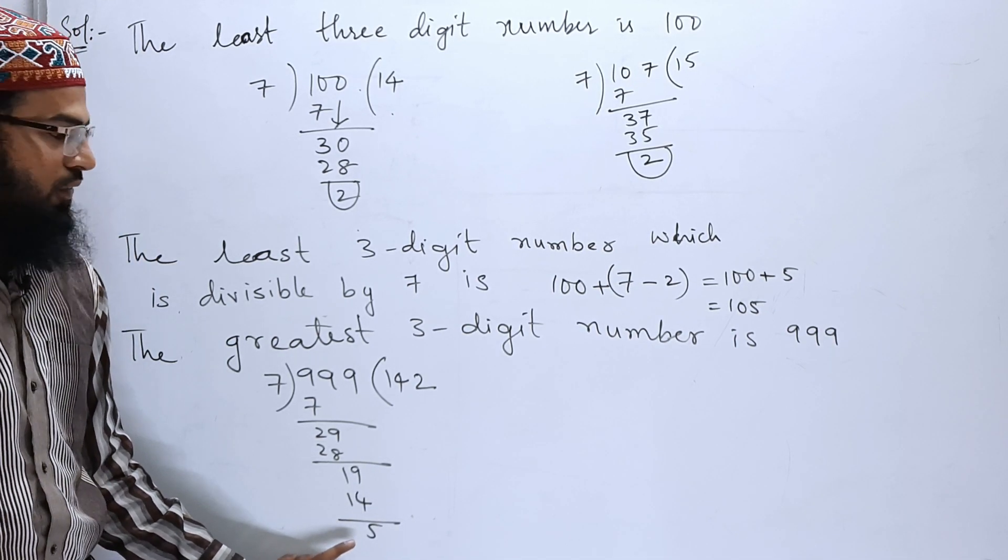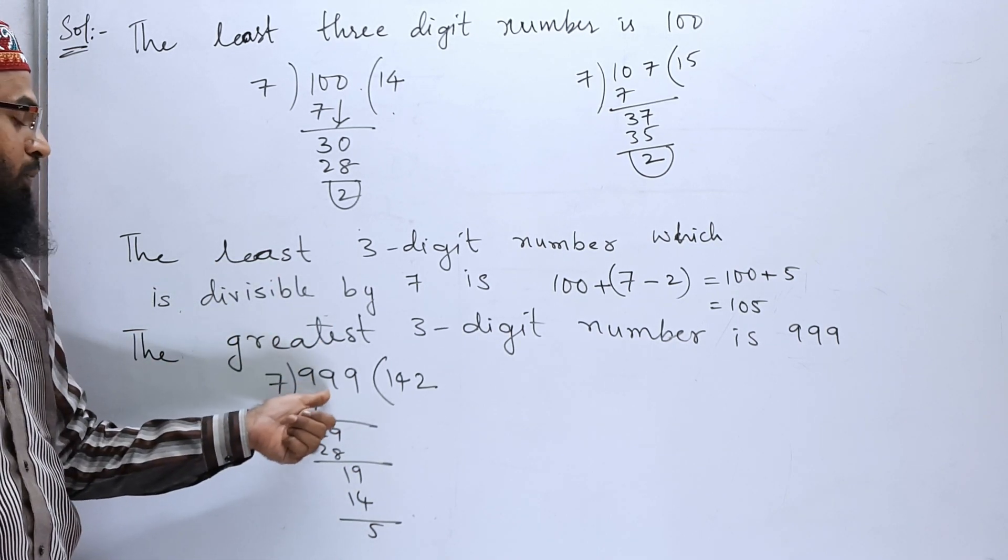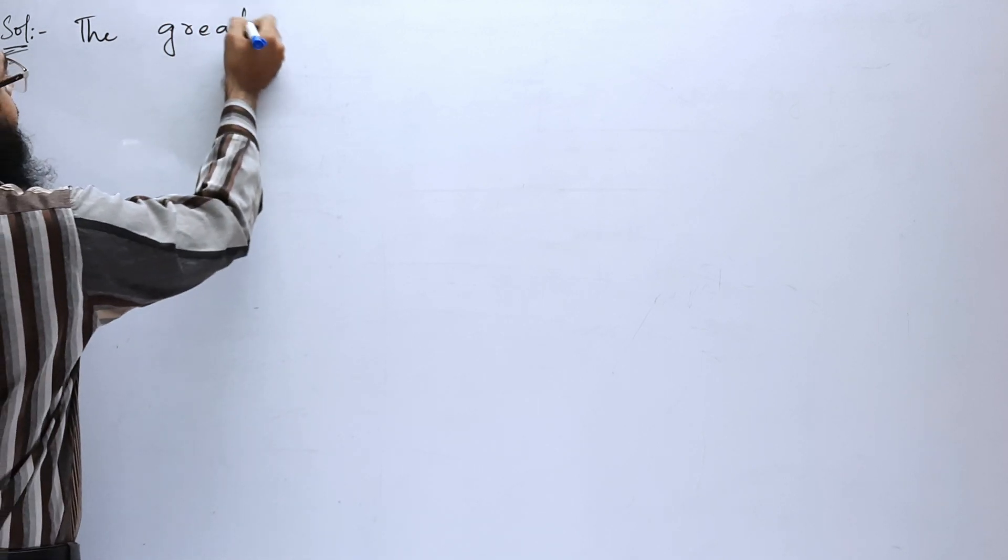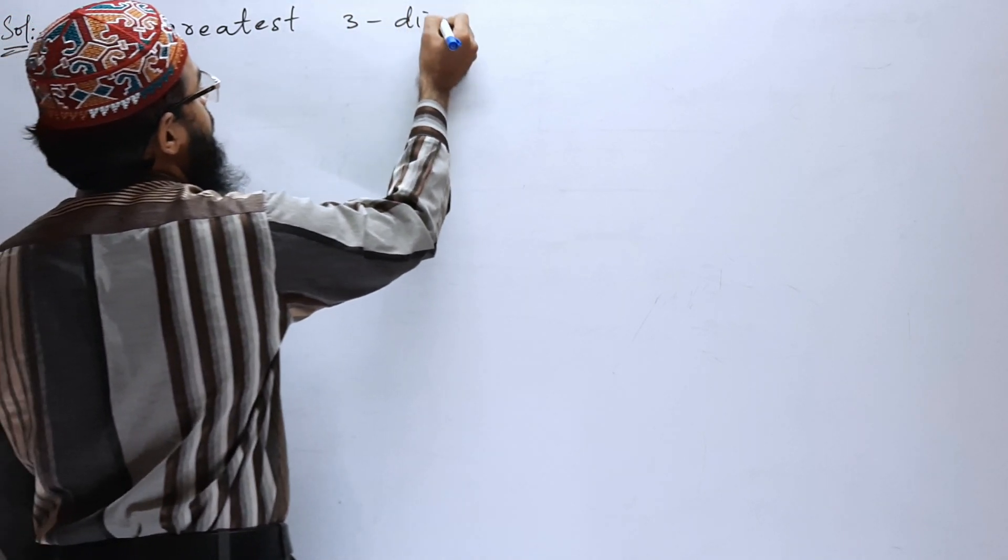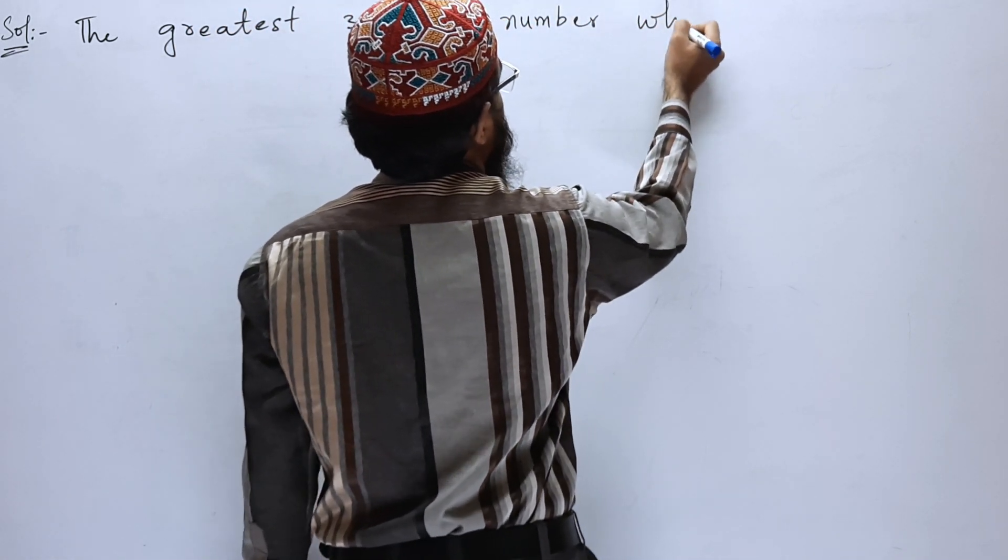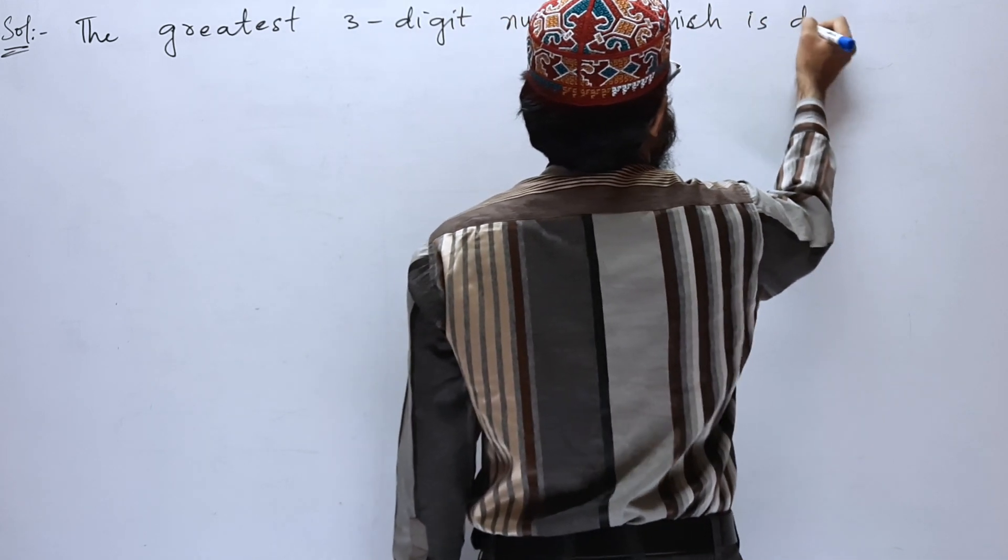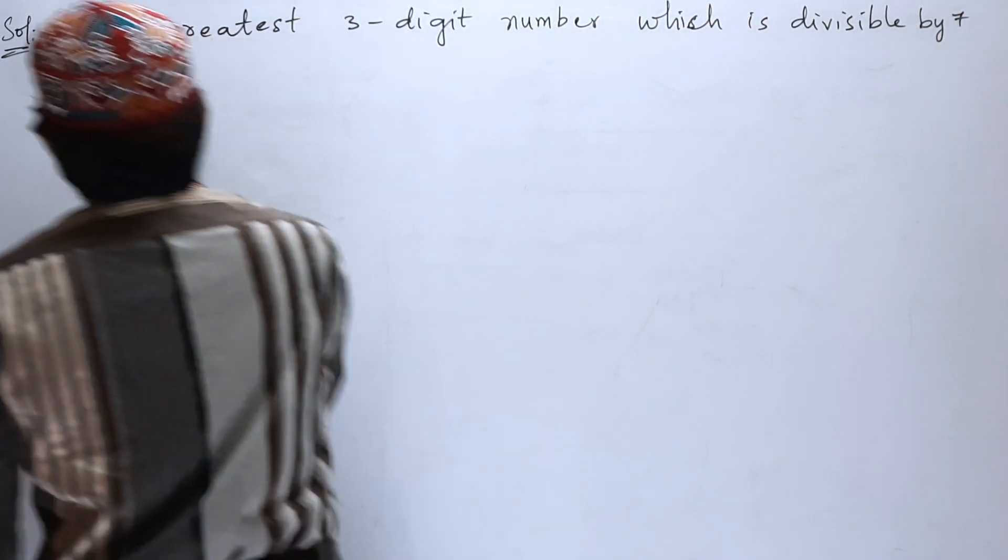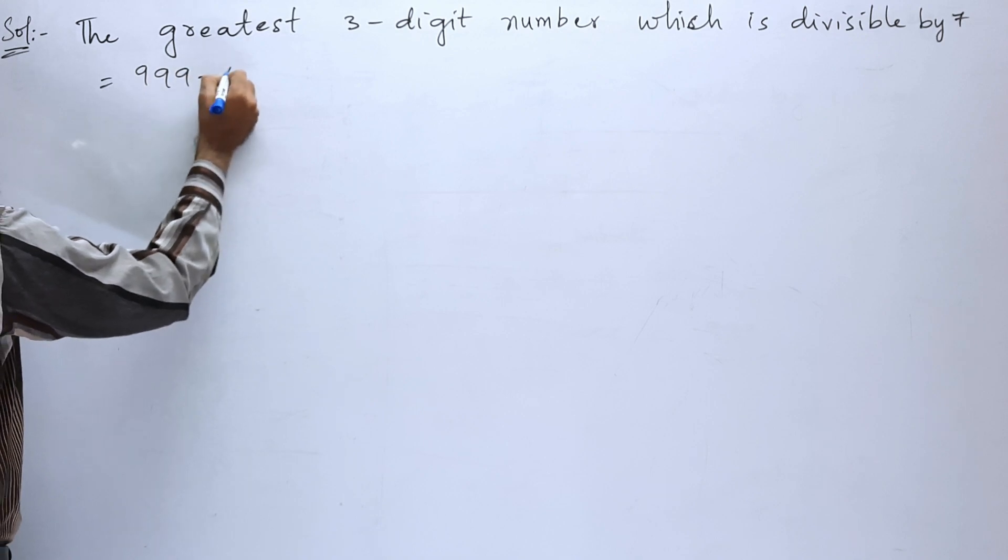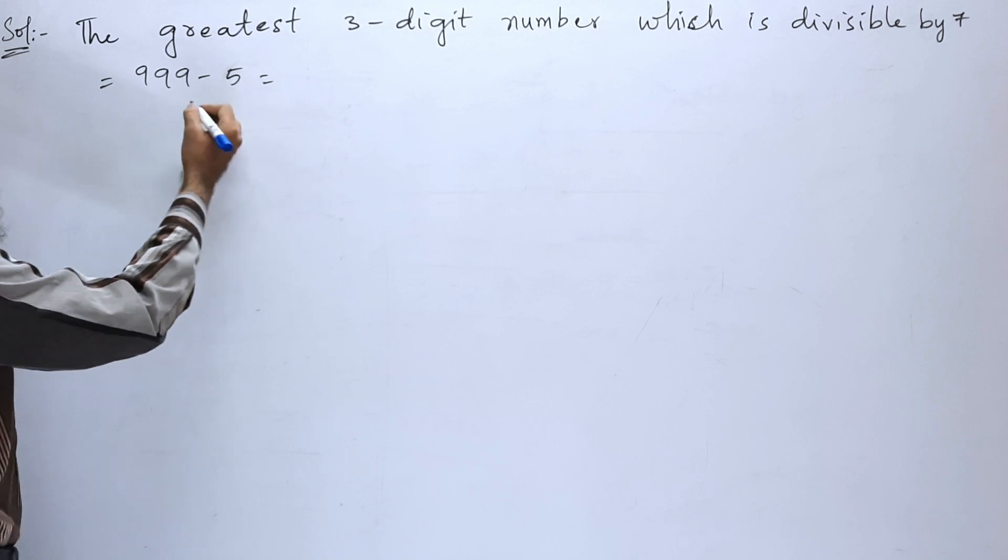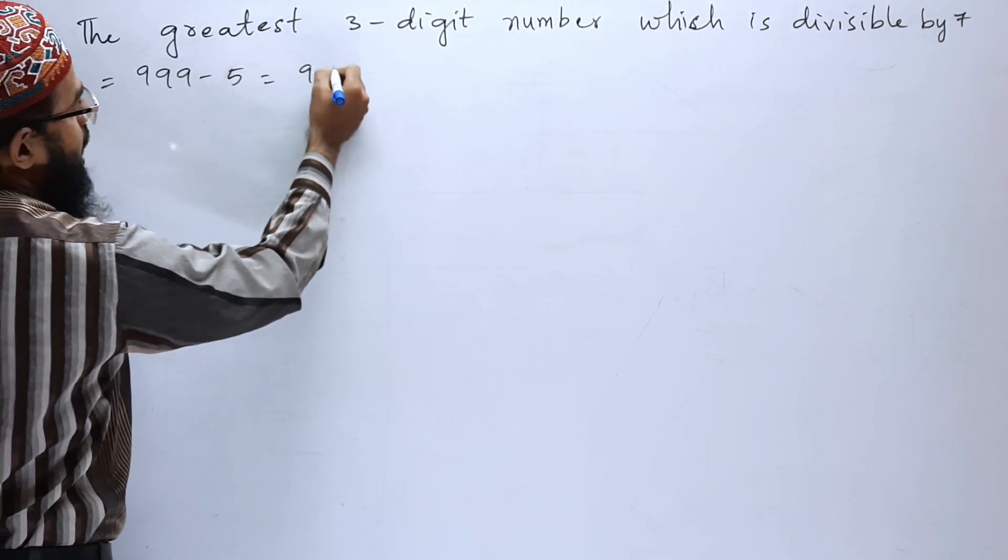As you can see the remainder is 5 and we can directly subtract this from 999. So the greatest 3-digit number which is divisible by 7 is 999 minus 5 is equal to 994.